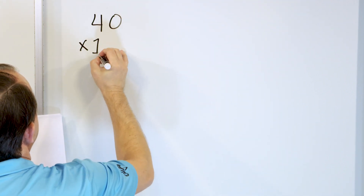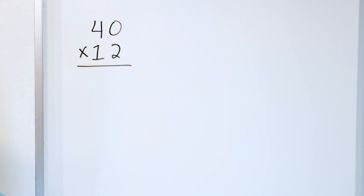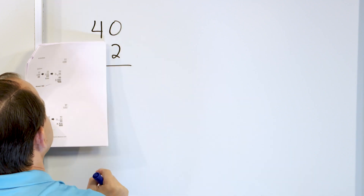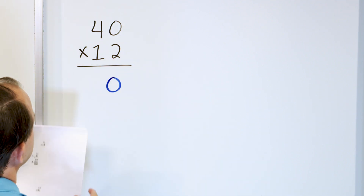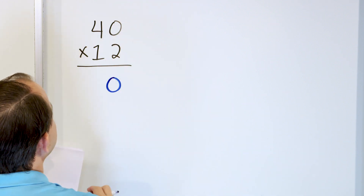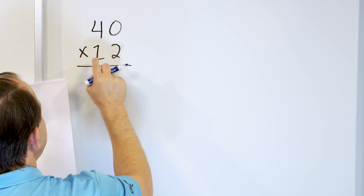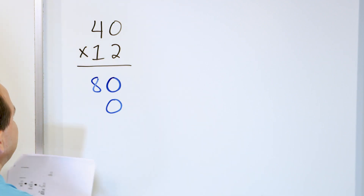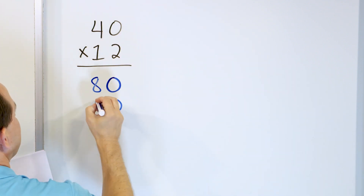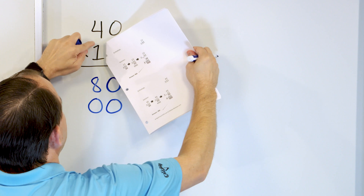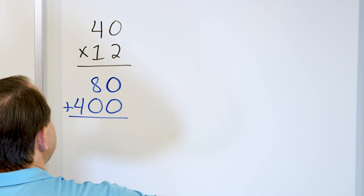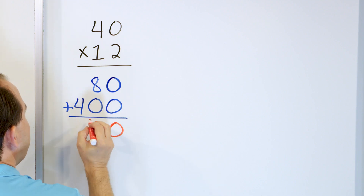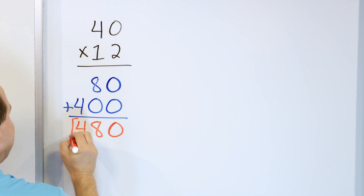Problem number five: we have 40 and we're going to multiply that by 12. The 1 is not there. 2 times 0 is 0. I'm not going to write the 0 right underneath because I may have to carry, so I'll shift it down a little. Then 2 times 4 is 8, and that goes right here. Now when I multiply by the 1, the very first thing I do is add a 0 before I do anything. Then 1 times 0 is 0, and 1 times 4 is 4. Then I add: 0 plus 0 is 0, 8 plus 0 is 8, and 4 plus 0 is 4. So I get an answer of 480.